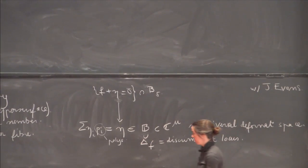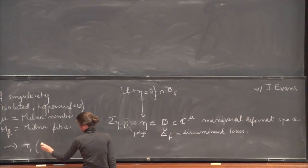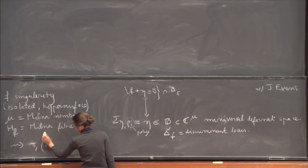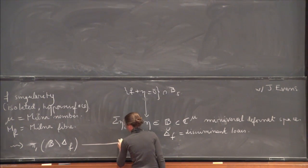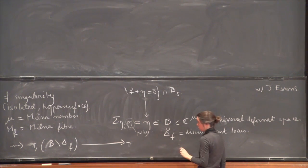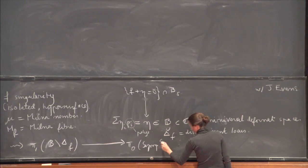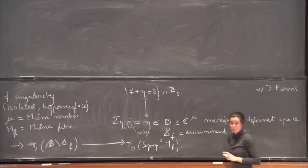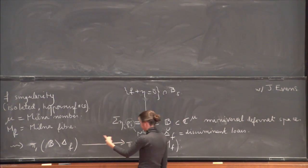And this setup gives a map from, ah, I forgot. Inside here, you have the discriminant locus for F, which is a set of all points such that this, rather intersected with some large ball, is singular. And this gives you a map from pi one of the complement of the discriminant locus.